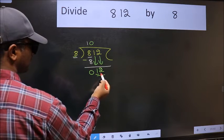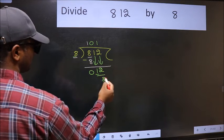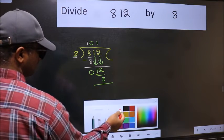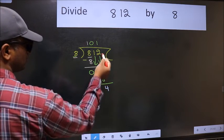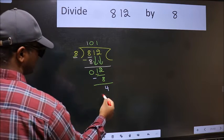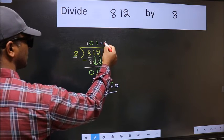Now 12. A number close to 12 in the 8 times table is 8. 8 times 1 equals 8. Now we should subtract. We get 4. No more numbers to bring down, so we stop here. This is our remainder and this is our quotient.